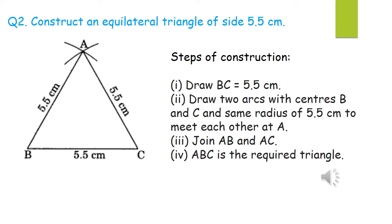Question number 2: construct an equilateral triangle of side 5.5 cm. All three sides are equal. We draw line BC equal to 5.5 cm. Placing the pointer at B with radius 5.5 cm we draw an arc; placing the pointer at C with the same radius we draw another arc. The two arcs intersect at point A. We join AB and AC to get the required triangle ABC, where all three sides are equal to 5.5 cm — so ABC is the required equilateral triangle.